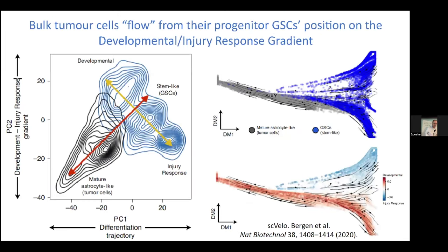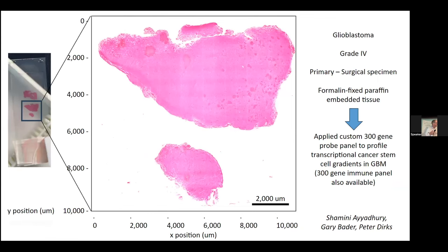Once we'd done all that work on purified glioblastoma stem cells and established the developmental-to-injury-response gradient, we turned to tissues. We wanted to know what these stem cells are doing in bulk tissue. We still didn't have spatial at the time—just single cells. What we found was that bulk tumor cells were fountaining out of the glioblastoma stem cell gradient, giving rise to the same astrocytic lineage. We had two axes at play: the developmental gradient in stem cells, and bulk tumors rushing out of the stem cell population. The question became: is that what we actually see in real tumors? This is still ongoing research.